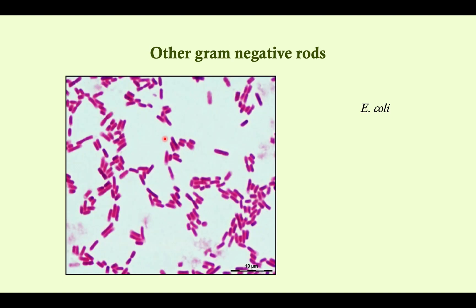And finally, we have the other gram-negative rods — plain old straight rods. There are a ton of these, and we're going to spend the bulk of our time talking about them. They are obviously rods and not curved. Anytime you have a gram-negative rod, your first step is to culture it on MacConkey agar, which tells you if it's lactose-fermenting or not. This is E. coli, which is one of our lactose-fermenting gram-negative rods.